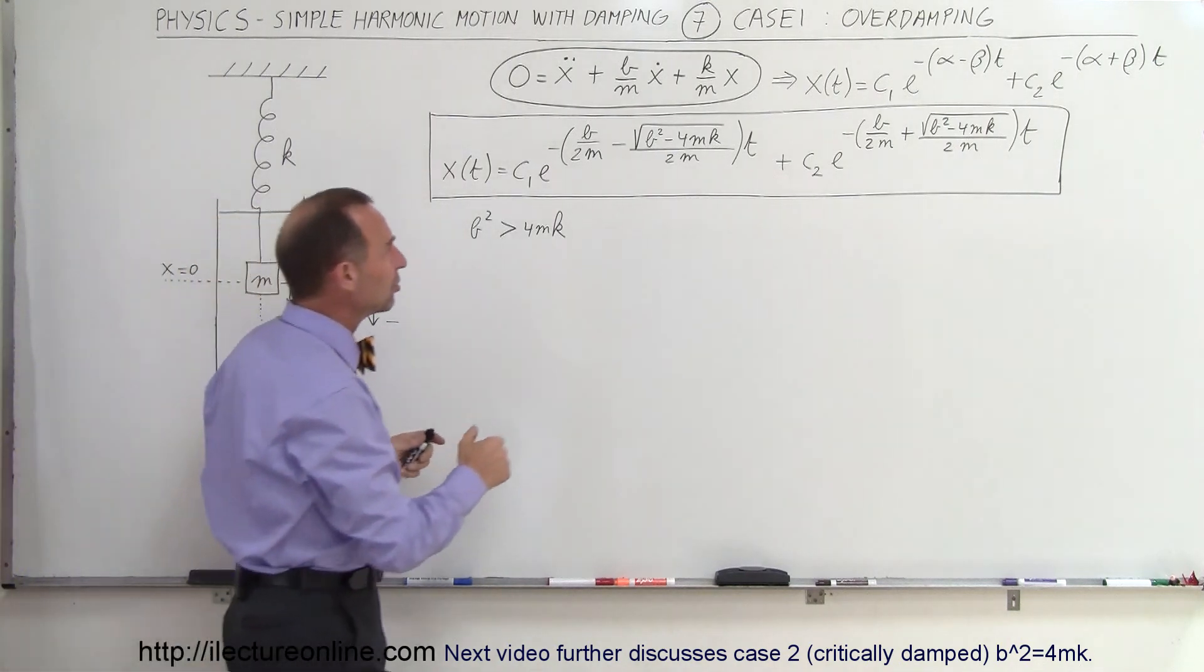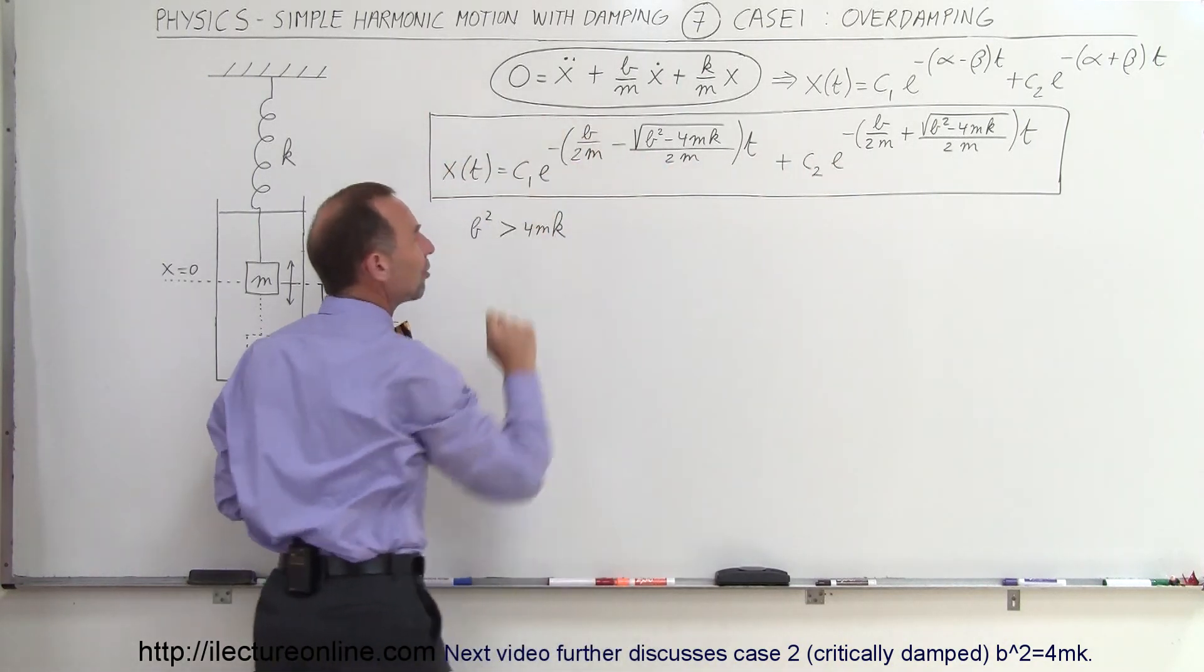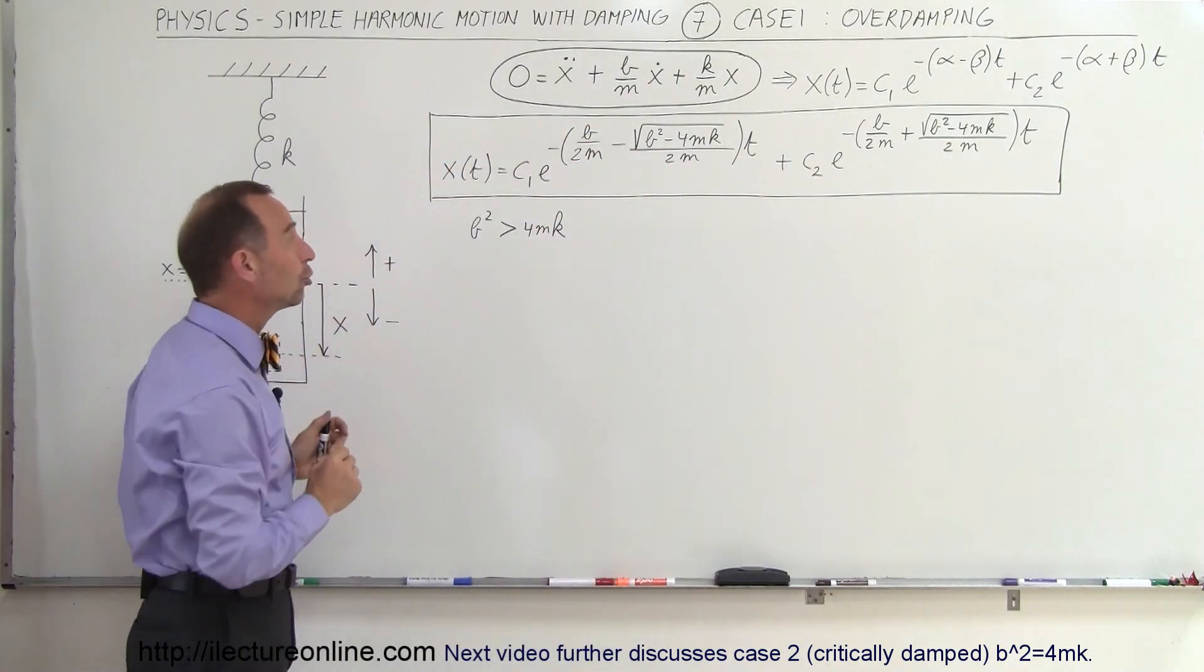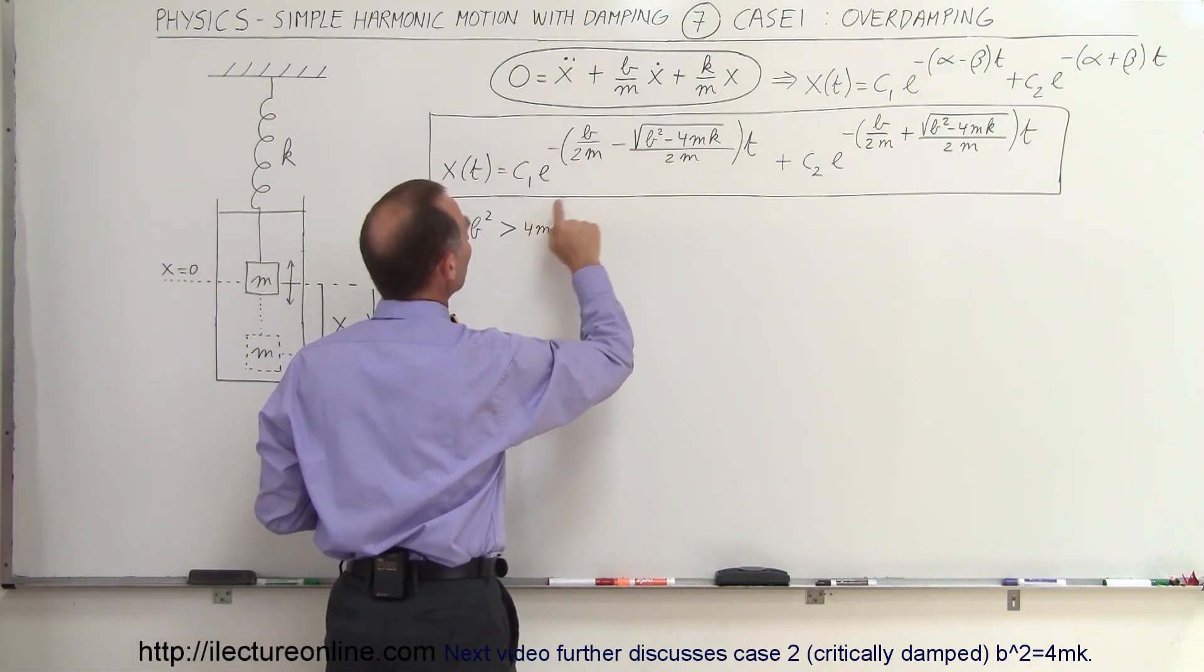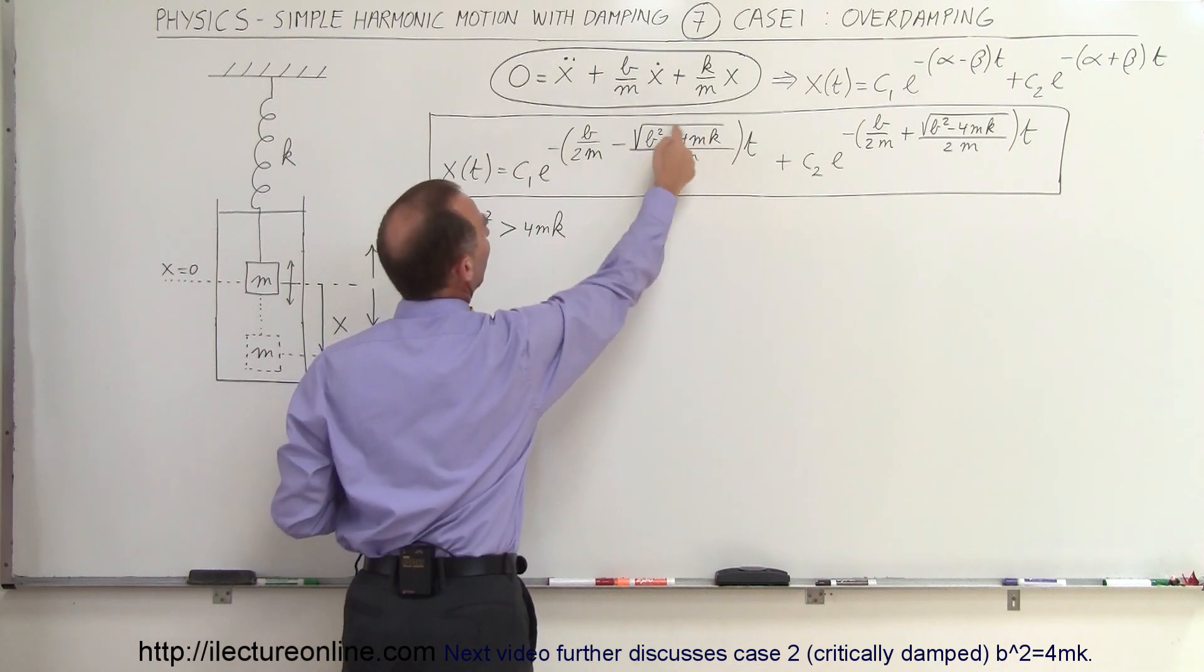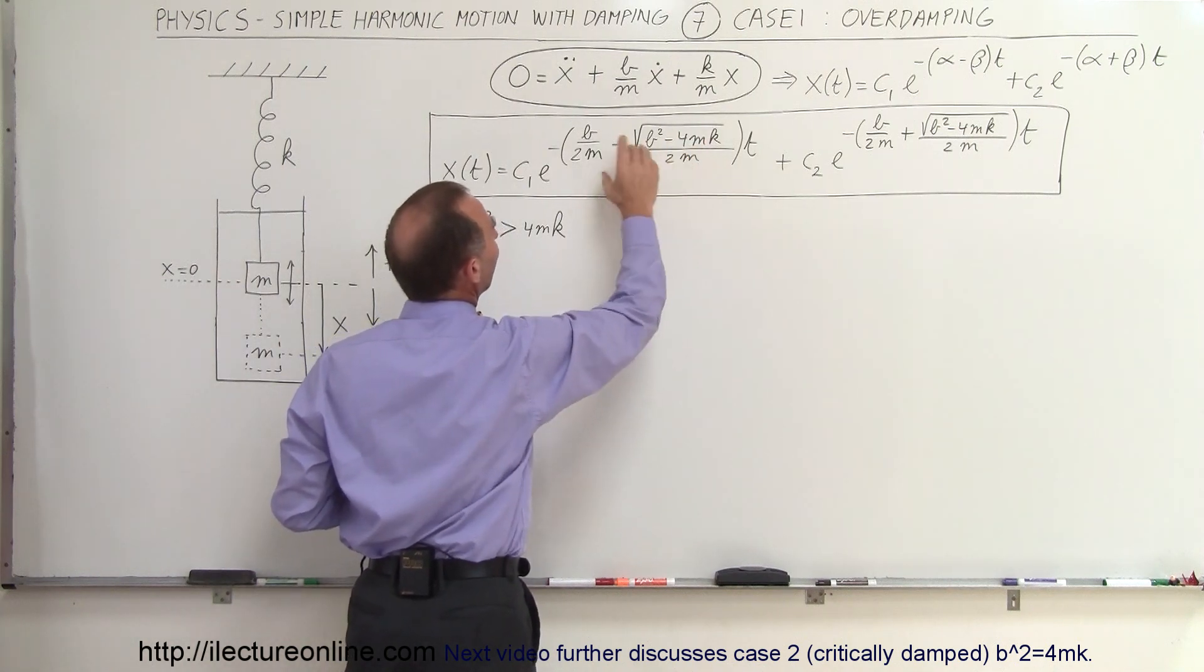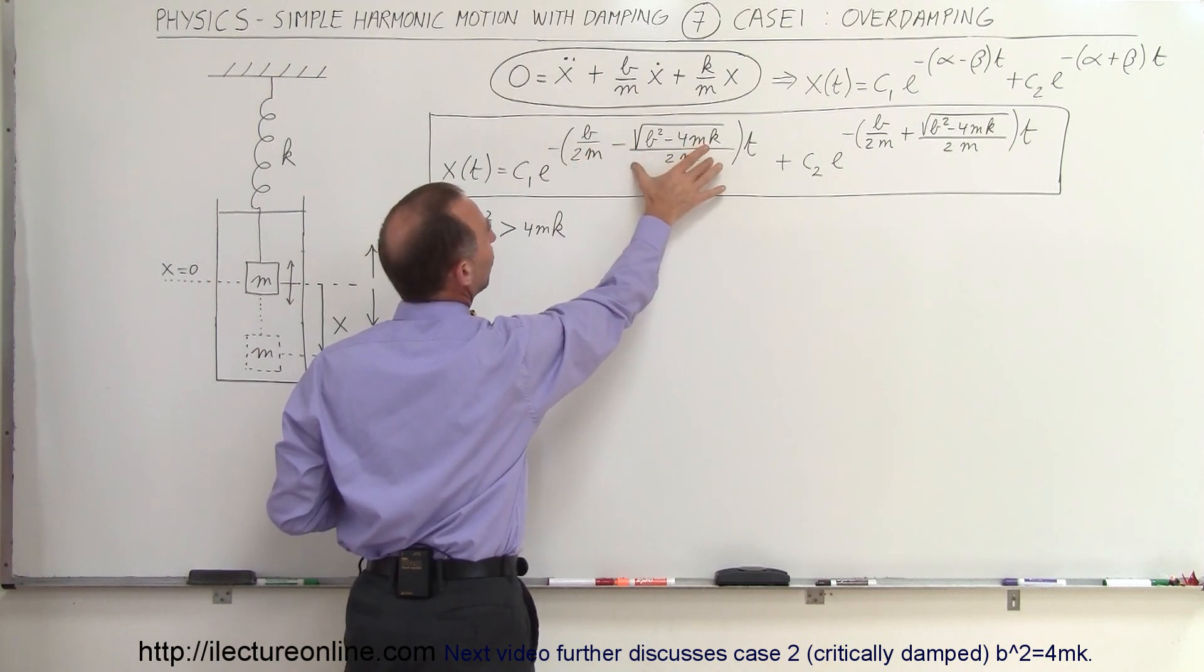So looking at this equation here, since this is a general equation, the general solution to the differential equation describing this motion, you can then take a look here at each of these exponents. Notice that if B squared is larger than 4mk, this will become a positive quantity. And so now we have B divided by 2m minus this quantity, which is positive.